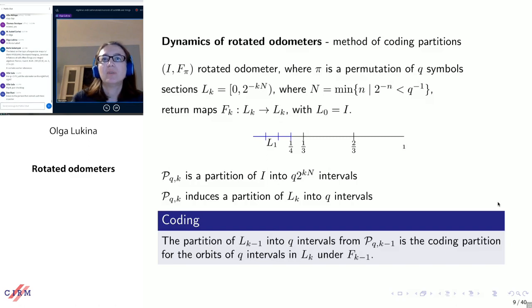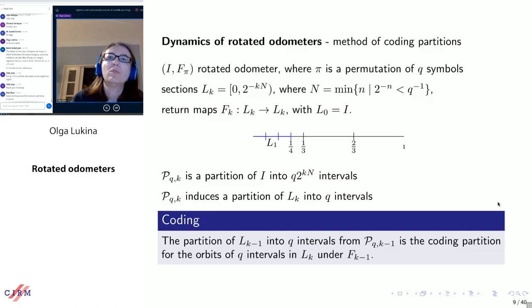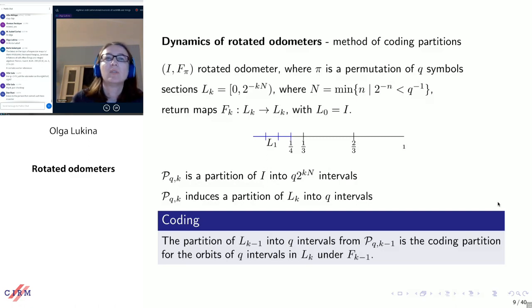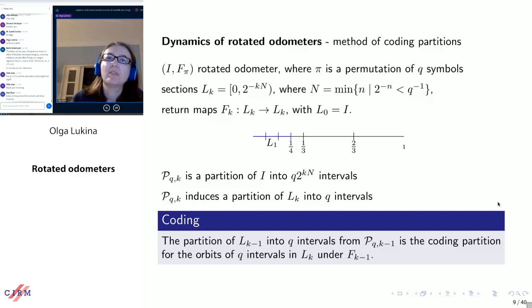The next few slides are going to be a bit technical because I'm going to give you some idea about the methods we use. What we are going to do is use coding — a sequence of coding partitions for our system. We have a fixed Q and a permutation. We are going to find a sub-interval of the unit interval which is small enough that it fits into one set of length Q, but whose length is an inverse multiple of two and is big enough.